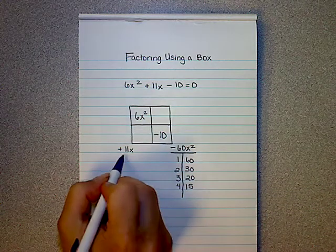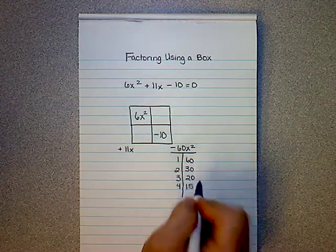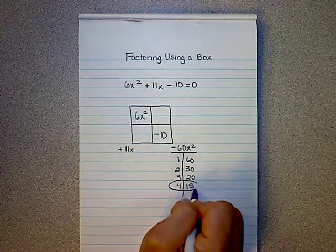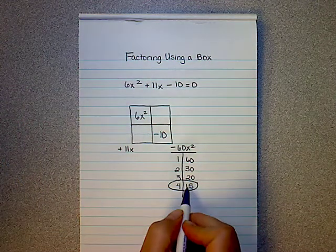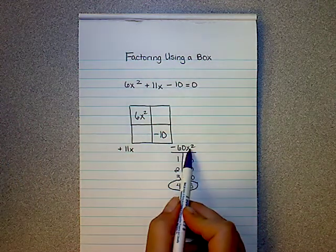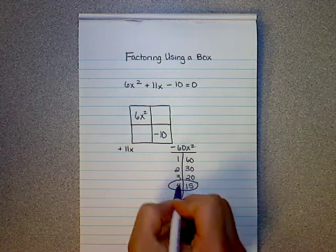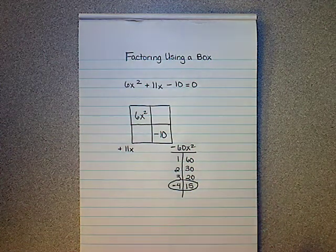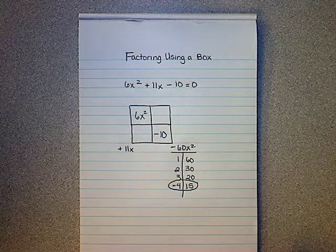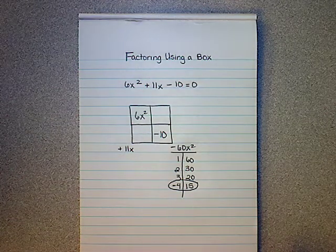Now my goal is to get a positive 11x and I can actually use 4 and 15 to make a positive 11x. To do this, I have to remember that these are both x's because this is an x squared. I can do 15 minus 4 or negative 4 plus 15 because negative 4 times 15 is negative 60 and negative 4 plus 15 is a positive 11x.